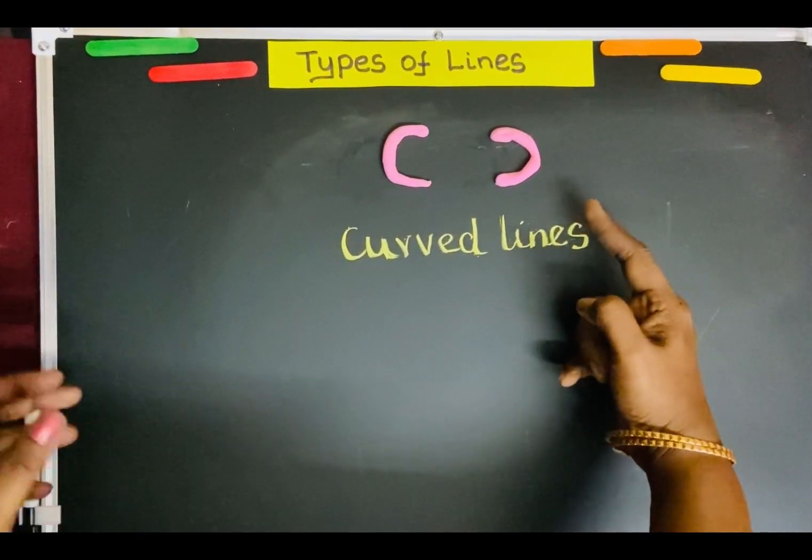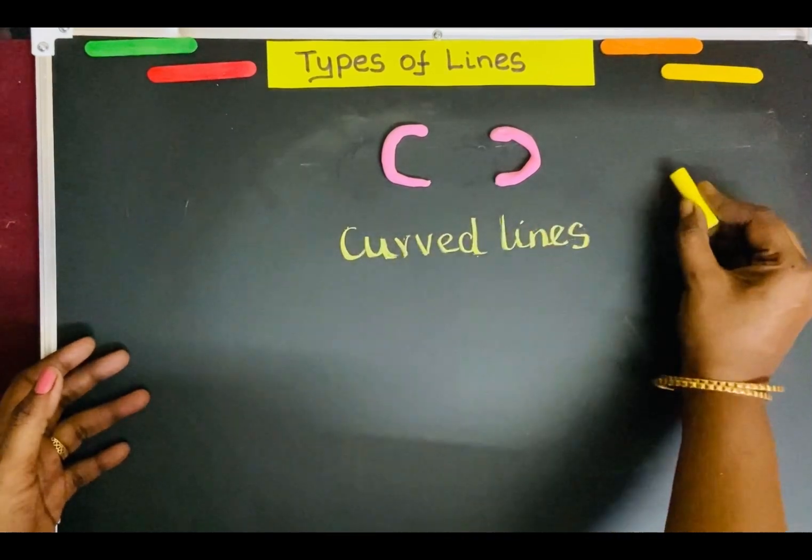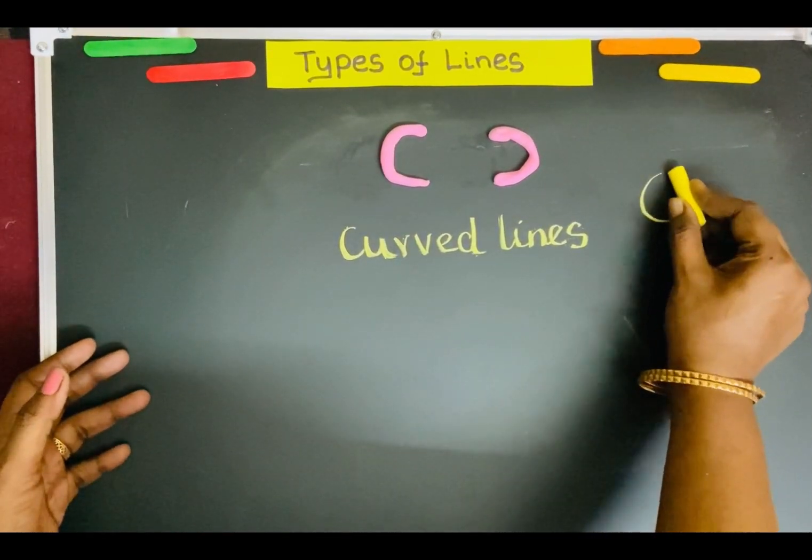We use curved lines to draw shapes like circle and oval.